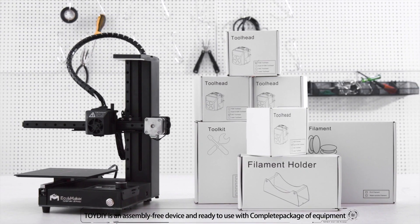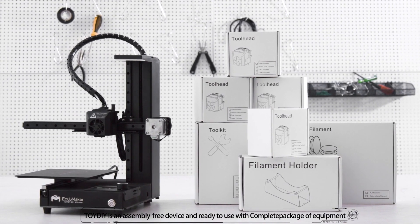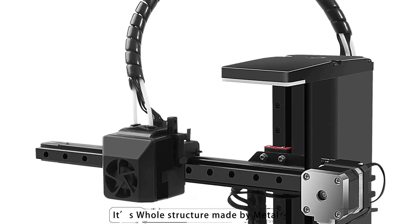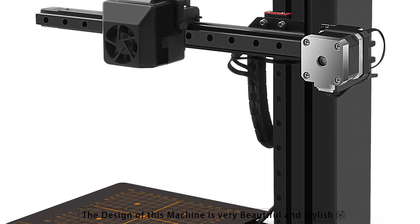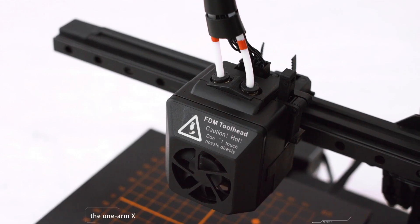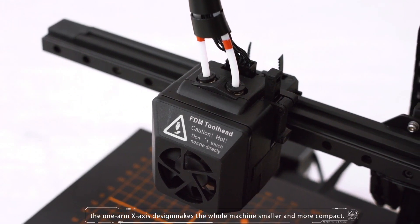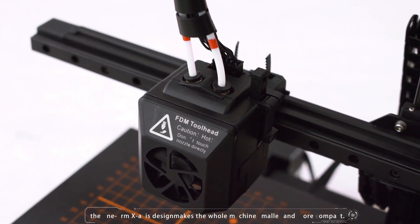ToyDIY is an assembly-free device and ready to use with complete package of equipment. Its whole structure is made by metal. The design of this machine is very beautiful and stylish. The one-arm X-axis design makes the whole machine smaller and more compact.